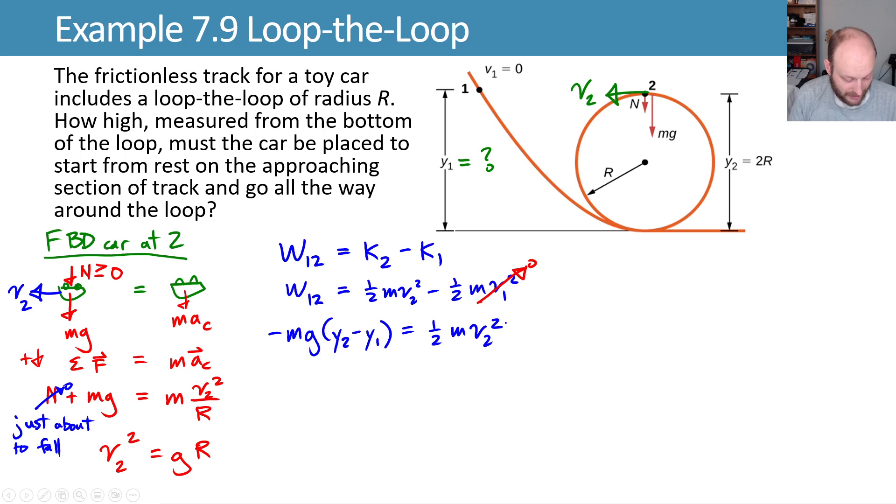It's looking promising. We can divide both sides by mass and now we can substitute in for our v2 squared. We'll substitute in and rewrite this as negative g times y2 minus y1 is equal to 1/2 times gr. If you don't like substituting in a squared term you can take the square root, substitute it in, and then square it again. But it's the same.